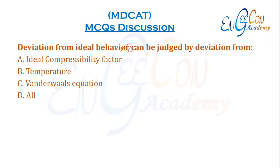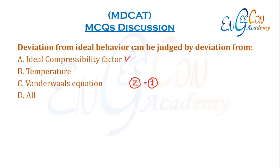Deviation from ideal behavior can be judged by deviation from the compressibility factor of 1. This is the compressibility factor for an ideal gas. When a gas deviates from ideal behavior, its compressibility factor value changes from 1 to some other value. So this is the correct option.